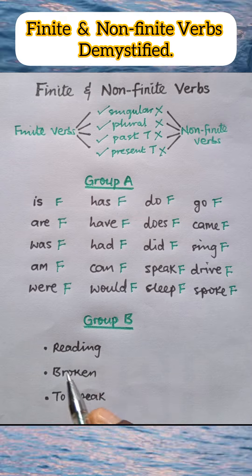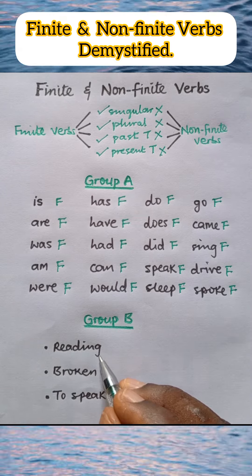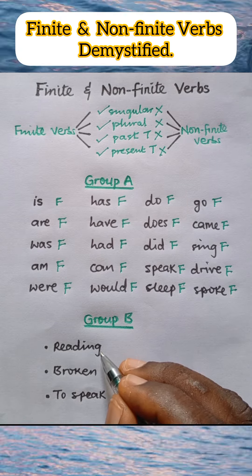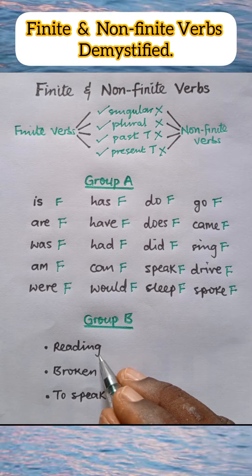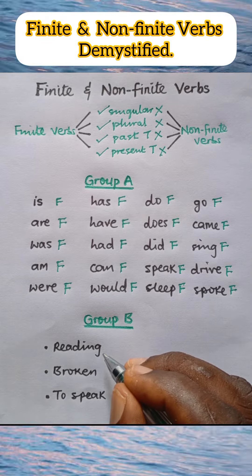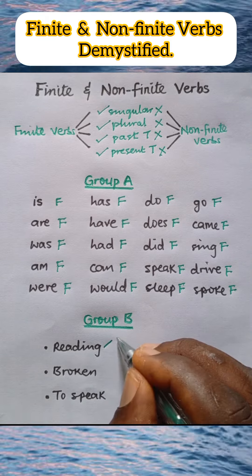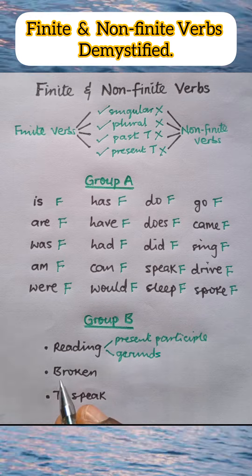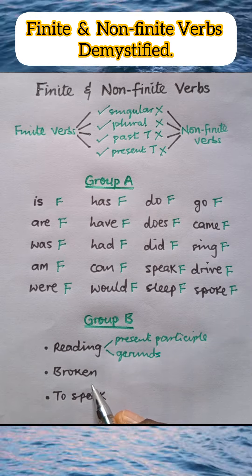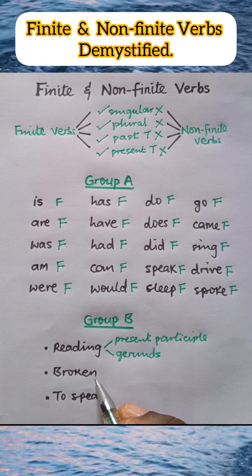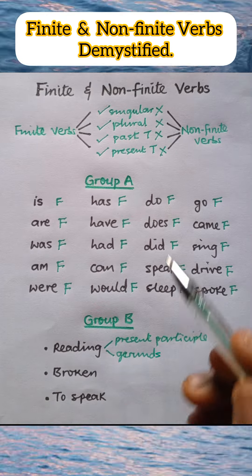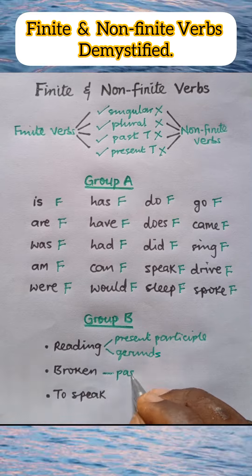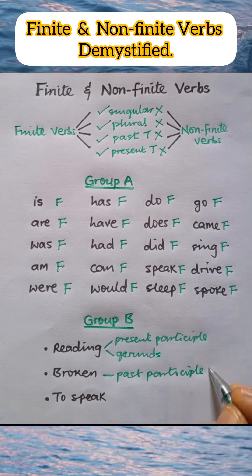Now let's go to group B. We start with reading. The verb reading is neither singular nor plural; it is neither present nor past. Reading, therefore, is a non-finite verb. And in fact, all verbs that end in -ing are non-finite verbs, and these include all present participle verbs and all gerunds. Next: broken. Broken is a past participle verb — it is neither singular nor plural, neither past tense nor present tense. Broken, therefore, is a non-finite verb. And indeed, all past participle verbs are non-finite verbs.